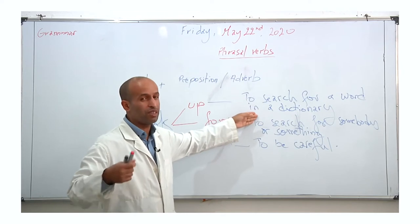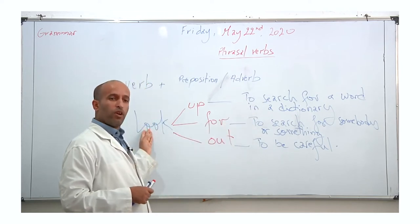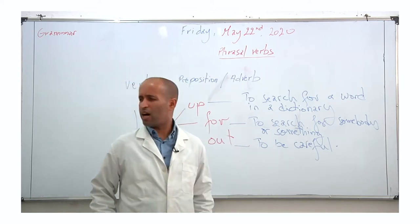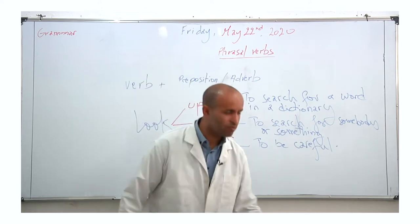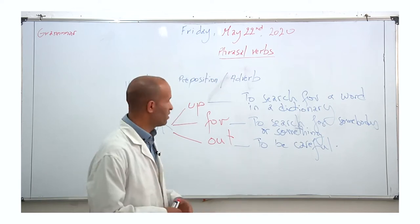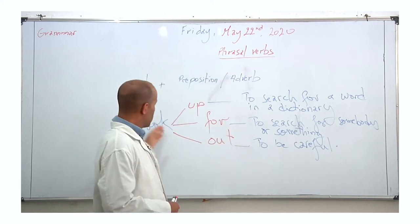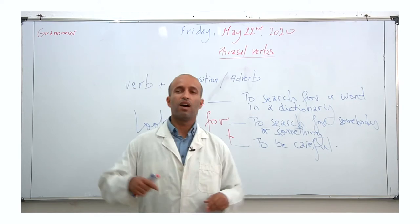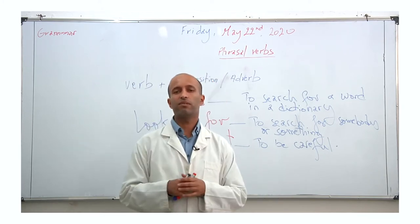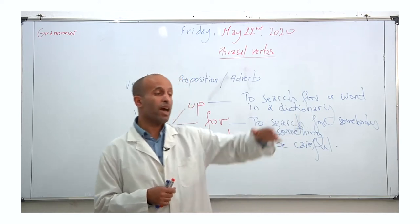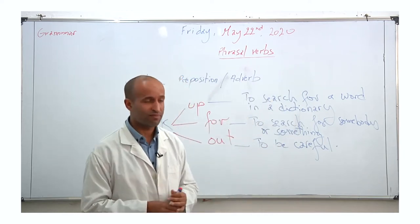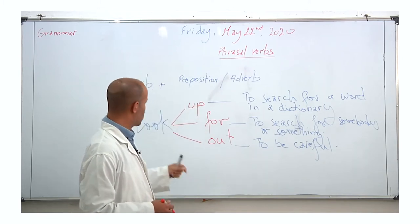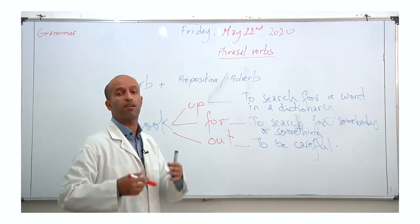You look up a word in the dictionary. When you lose something, you look for it. For example, I've lost my wallet and I'm looking for it now — I'm searching for it. 'Look out' means to be careful. Imagine you're crossing the street and a car is coming. Then somebody may call out to you: 'Hey, look out! Be careful.'